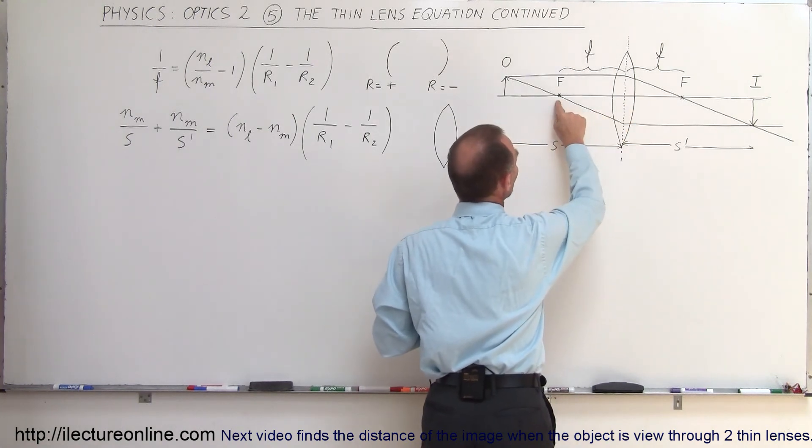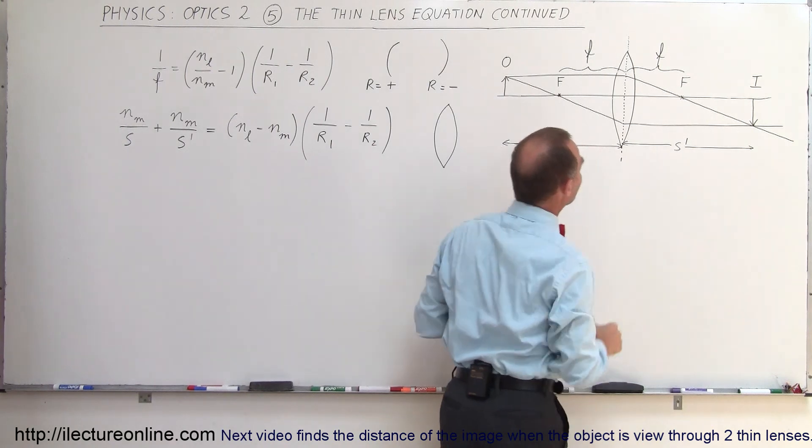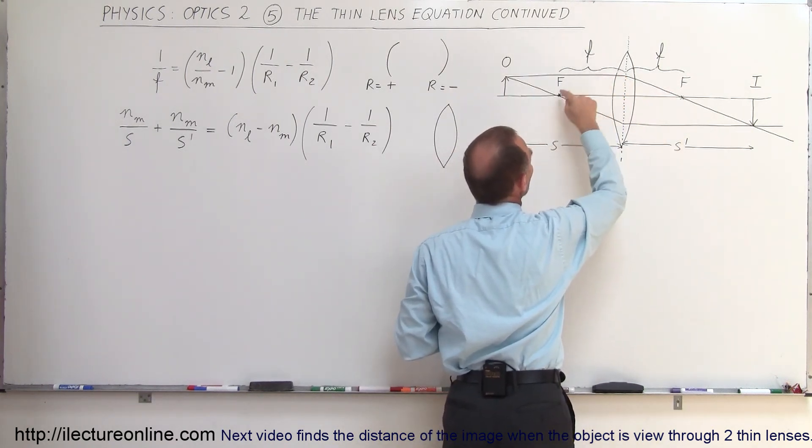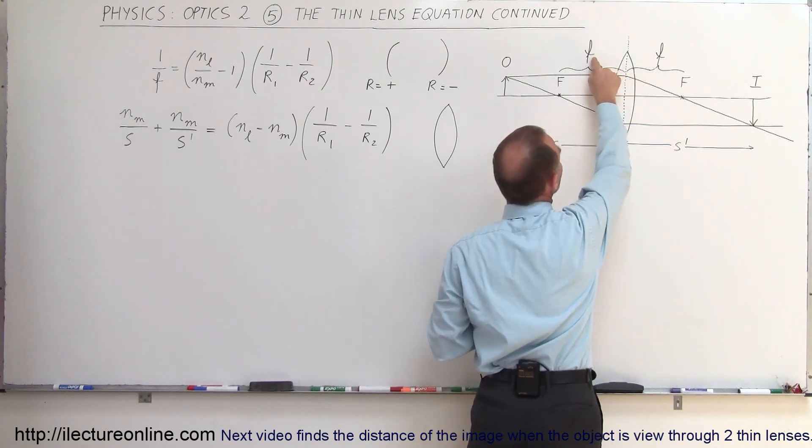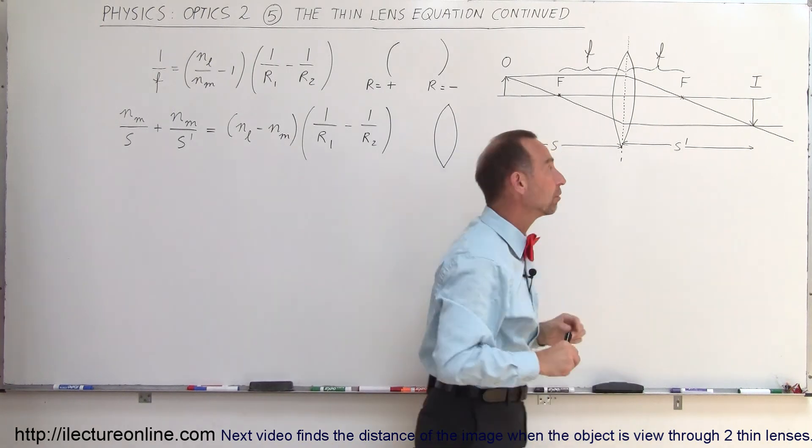A lens will have a focal point in front and behind, at equal distances on both sides. The distance from the center of the lens to the focal point is called the focal length, indicated by lowercase f. Capital F indicates the focal points.